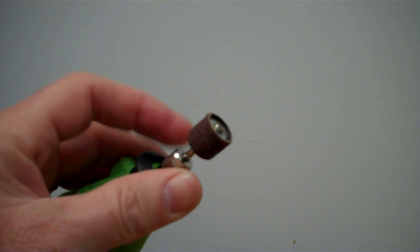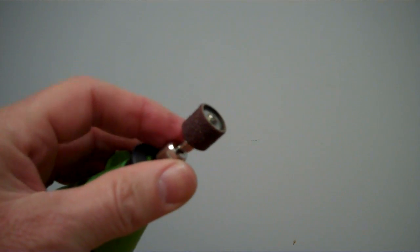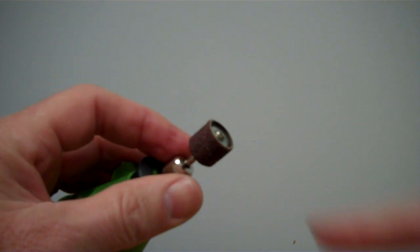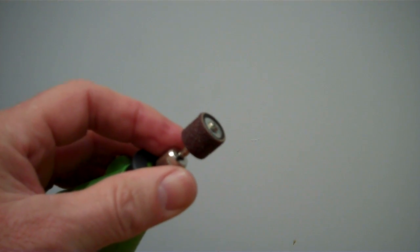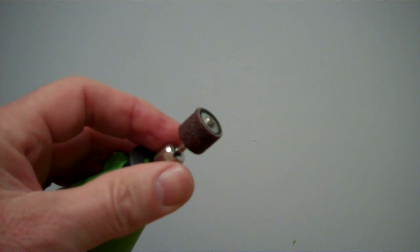So that's the secret to that. And in our kit that we're looking at here, there are two different diameters of this rubber drum because there are two different sizes of sanding drums, so you'll have to match those two up.